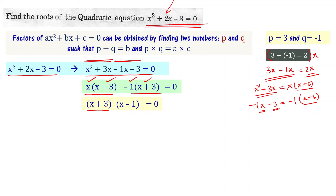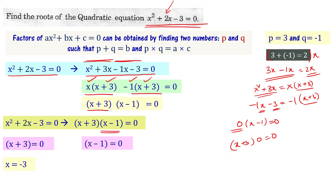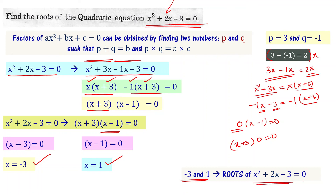If x + 3 = 0, then x = -3. And if x - 1 = 0, then x = 1. So the two roots of the given quadratic equation x² + 2x - 3 = 0 are x = -3 and x = 1. Minus 3 and 1 are the roots of x² + 2x - 3 = 0. This is what we were asked to find.